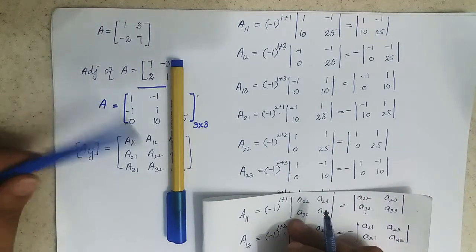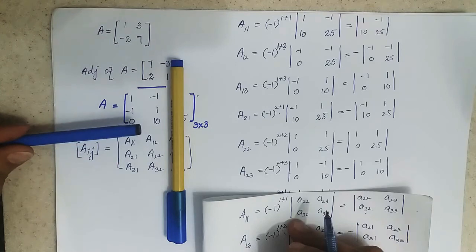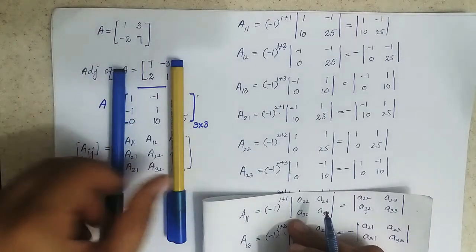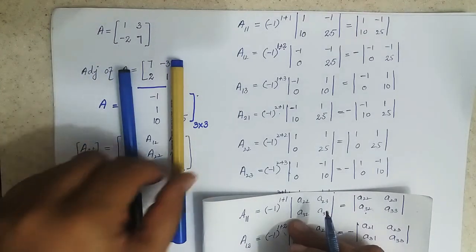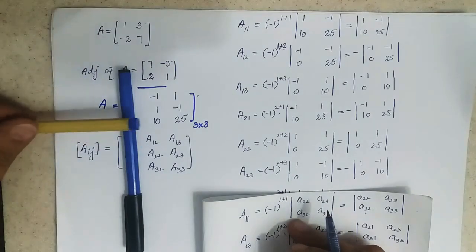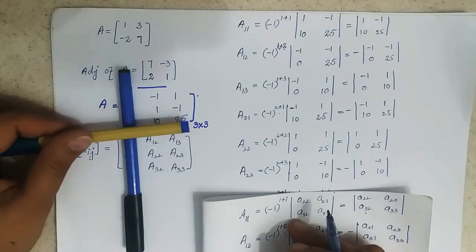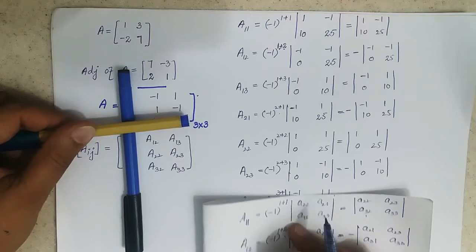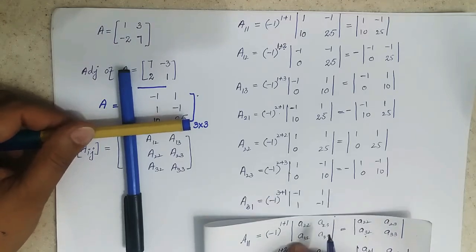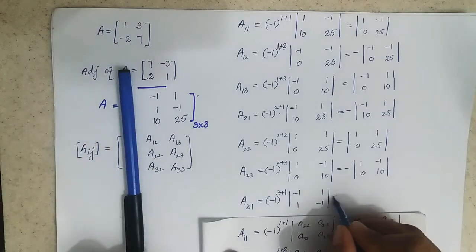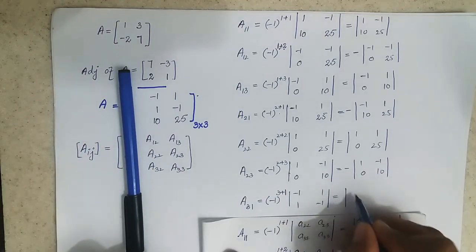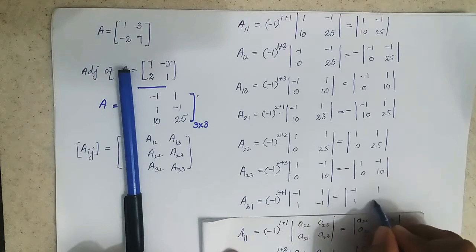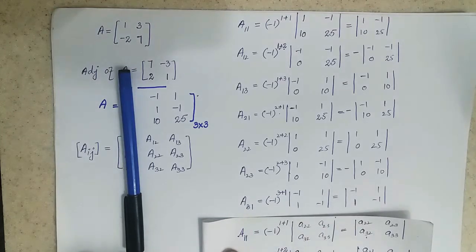For A31, we leave the first column and third row. The inside elements are minus 1, 1, 1, minus 1. The power is even, so the determinant will be positive — the outside sign will be positive.